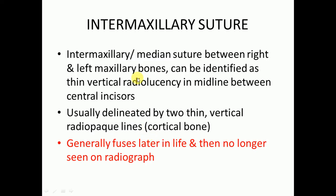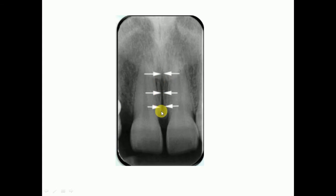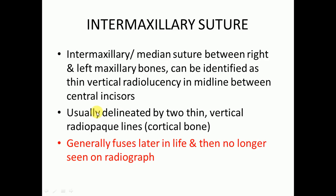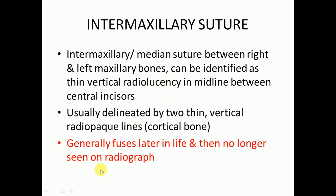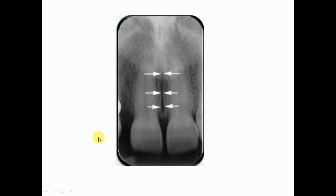Then we have the intermaxillary suture. The intermaxillary or median suture between the right and left maxillary bones can be identified as a thin vertical radiolucency in the midline between the central incisors, usually delineated by vertical radiopaque lines of cortical bone. It generally fuses later in life and is then no longer seen on radiographs.